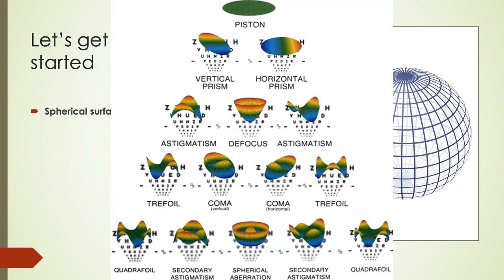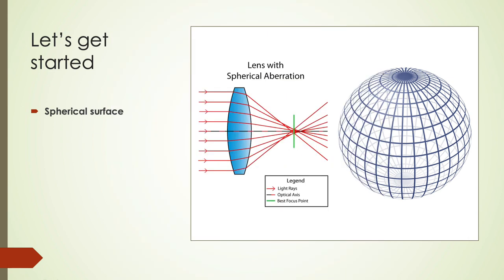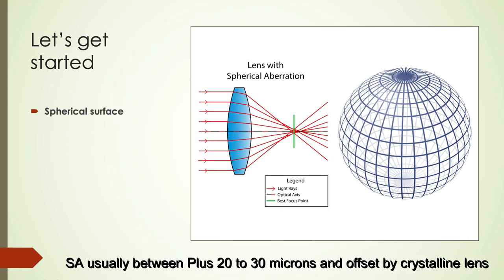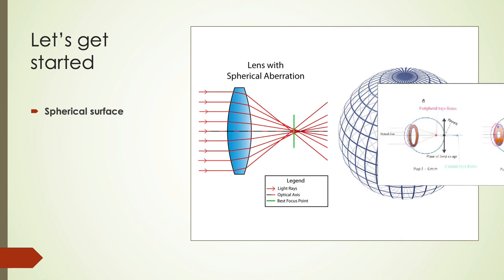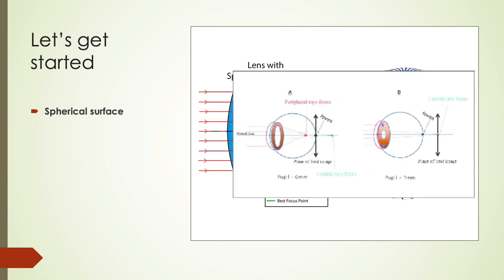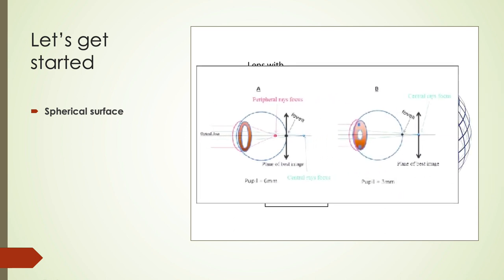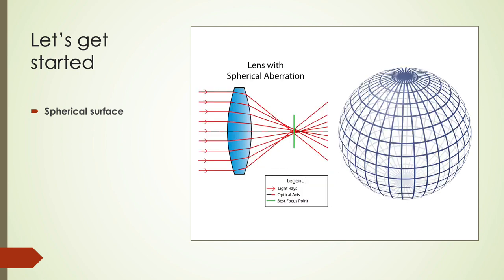Spherical aberration is a fourth order aberration and can be measured only by aberrometers. The average normal spherical aberration generated by the normal human cornea is about plus 20 to 30 microns. This aberration is neutralized by the normal human crystalline lens, which has a negative spherical aberration. The impact of spherical aberration is largely reduced by the pupil, which controls the entry beam of light, cutting off peripheral rays. However, in mesopic viewing conditions and in patients with a large resting pupillary diameter, spherical aberrations can become bothersome.